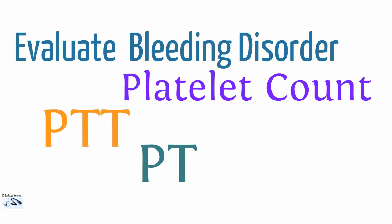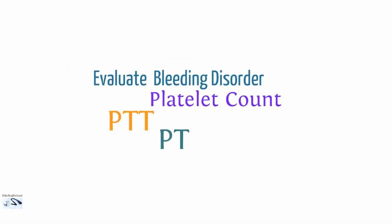So how do we evaluate bleeding disorders? Remember we're talking about patients who have an underlying cause for their bleeding, not just trauma. The three main tests you get are a platelet count, a PTT, and a PT. A platelet count assesses the amount of platelets, which is important because bleeding can commonly occur if someone is thrombocytopenic — meaning they have low platelets. We get a PTT to measure the intrinsic pathway and a PT to measure the extrinsic pathway.